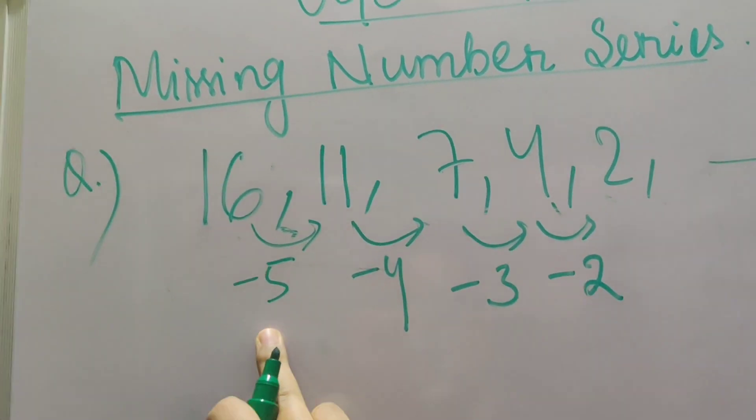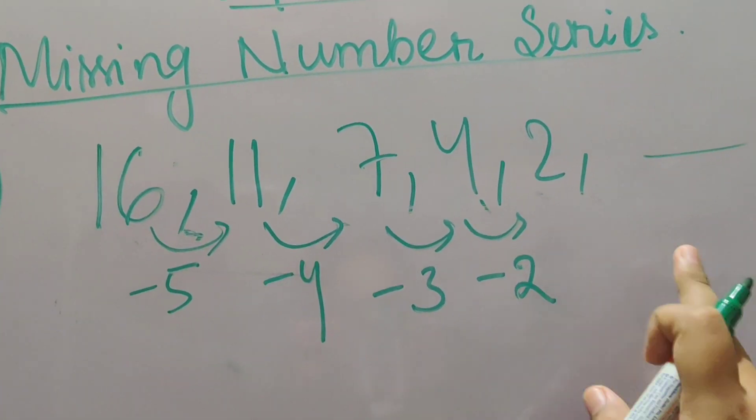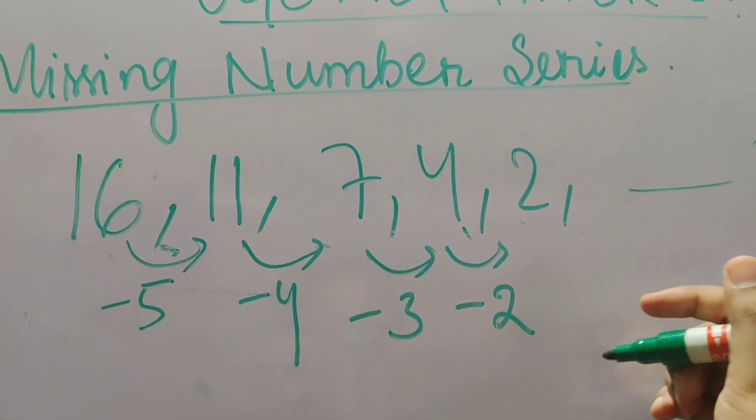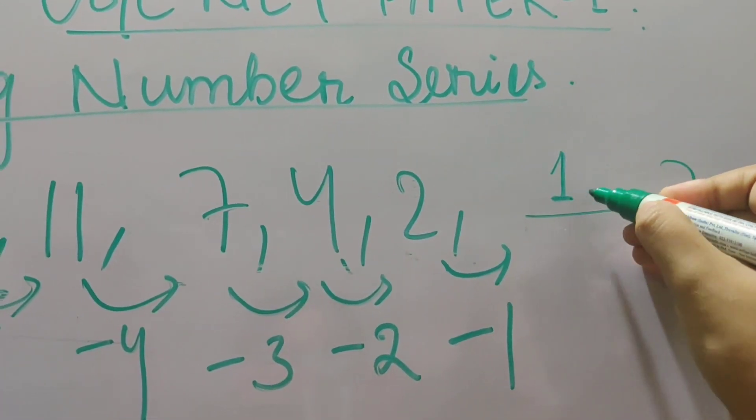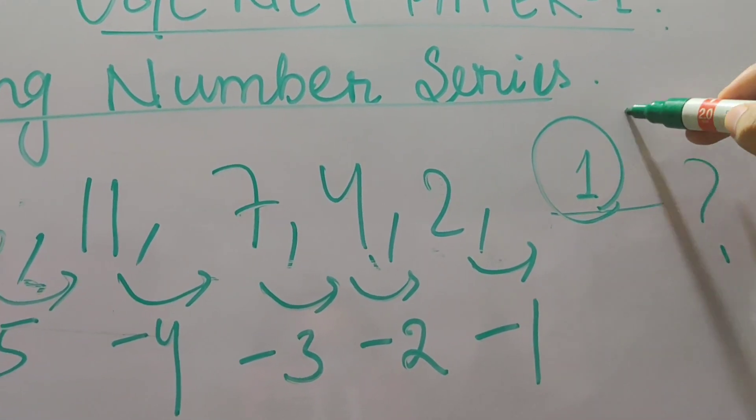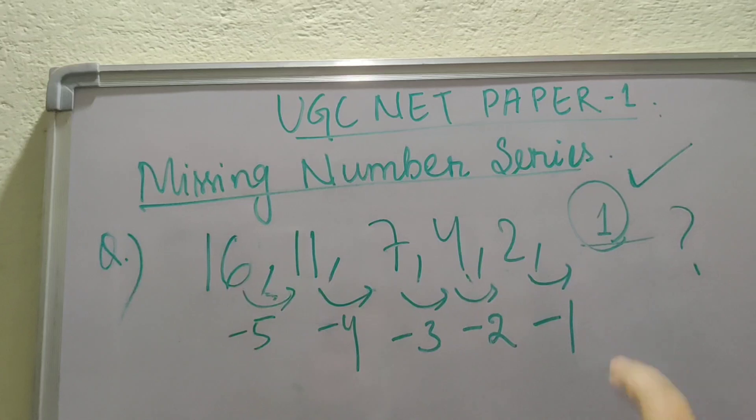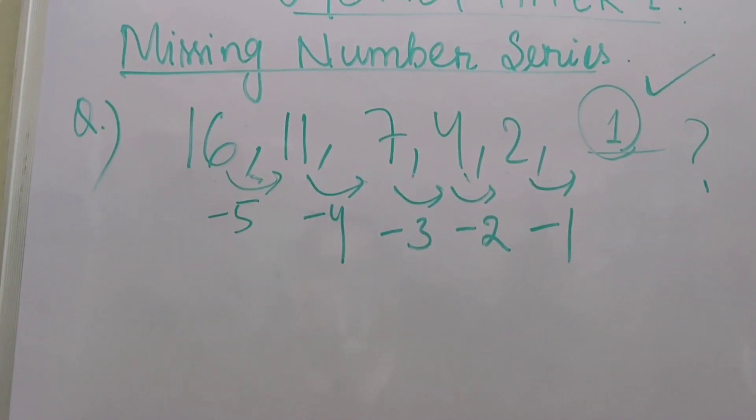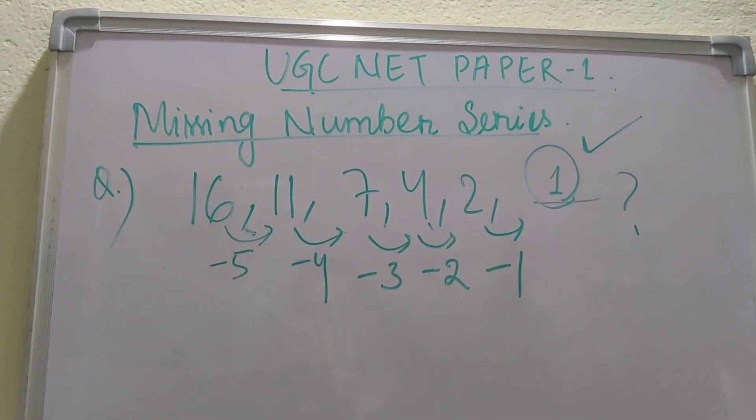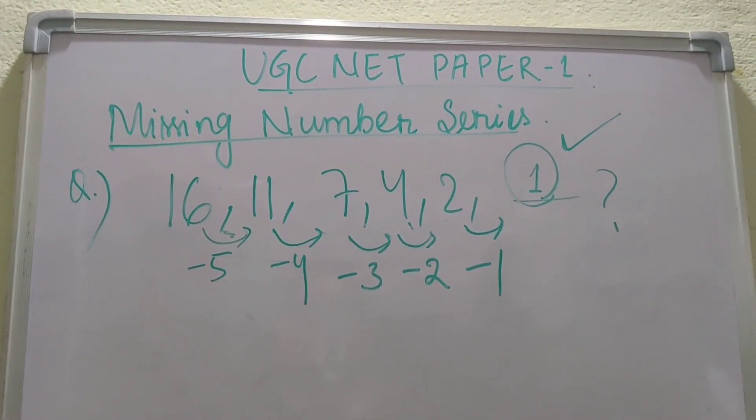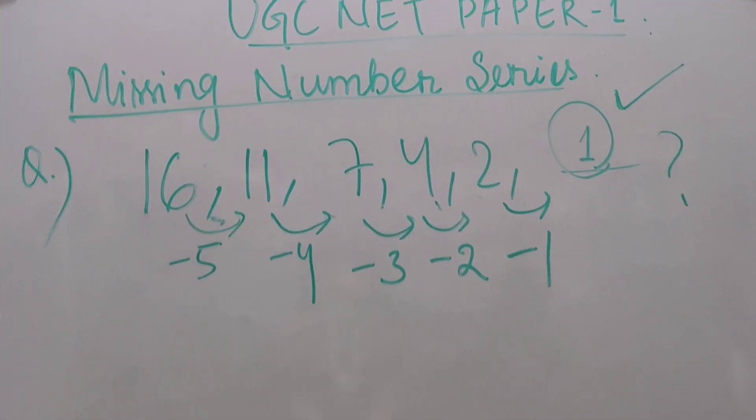Here we just observe a pattern: 5, 4, 3, 2. The next number is 1. Let us do minus 1. Minus 1 will give us 1. So the answer is simple, 1 will be the answer. With 1 we just completed the series. So whenever you see a pattern which is not related to cube or square of anything, just simply subtract it or add it and see whether your answer is coming or not.